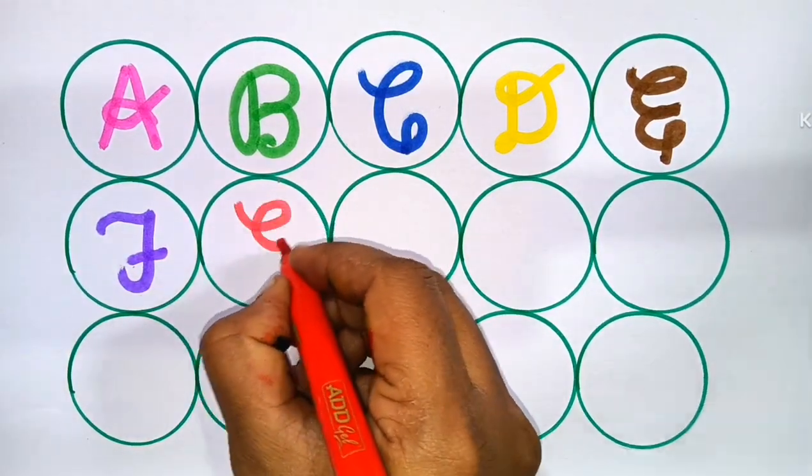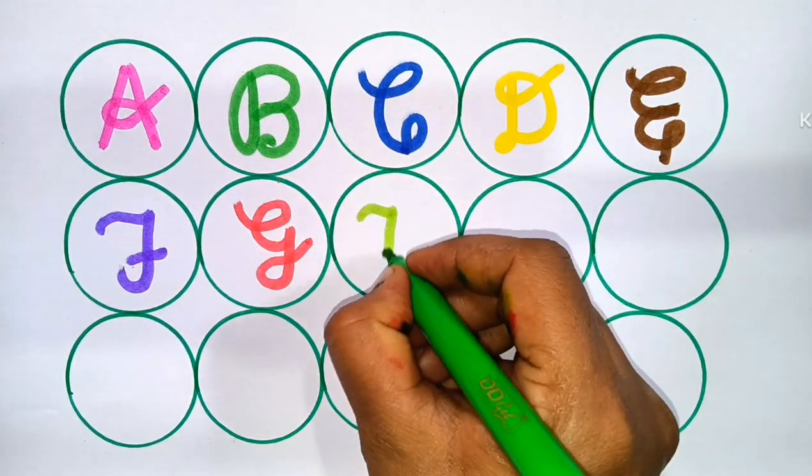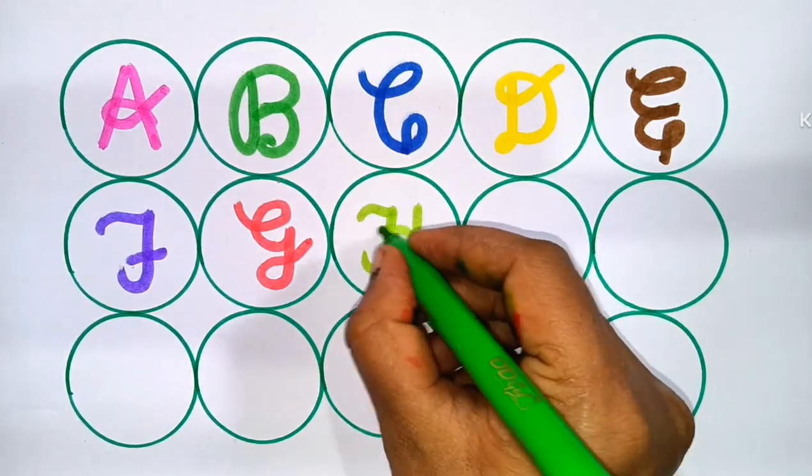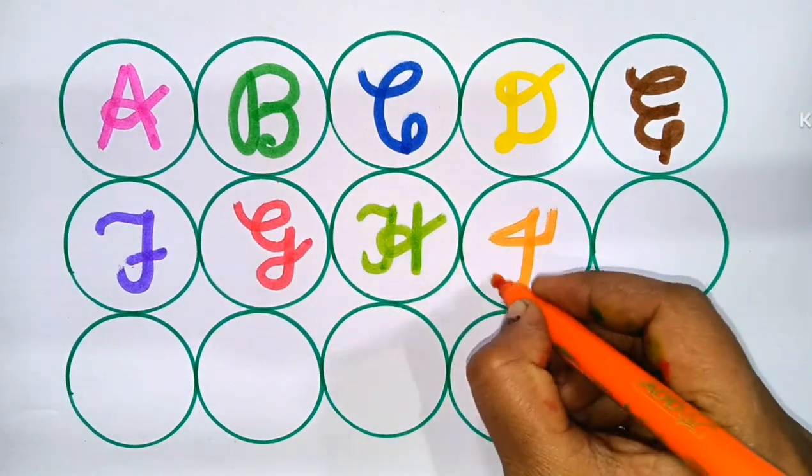Next, G. G for Goat. Next, H. H for Honey. Next, I. I for Ink.